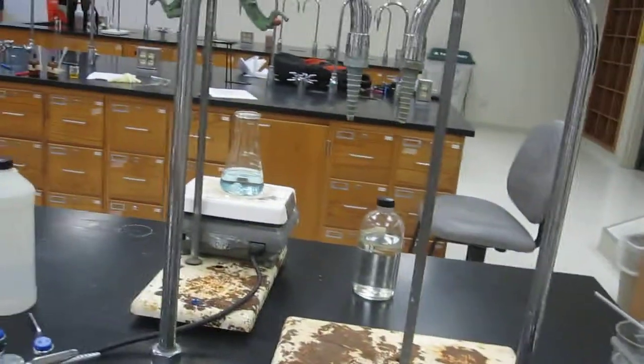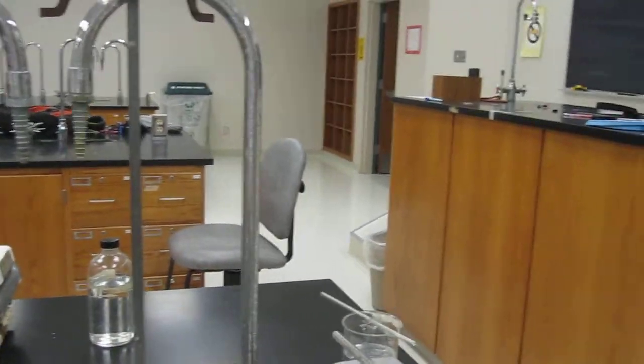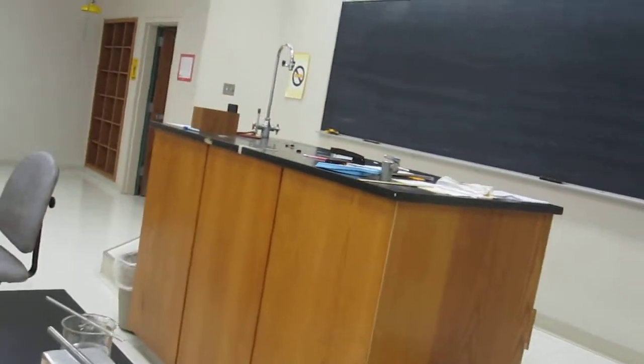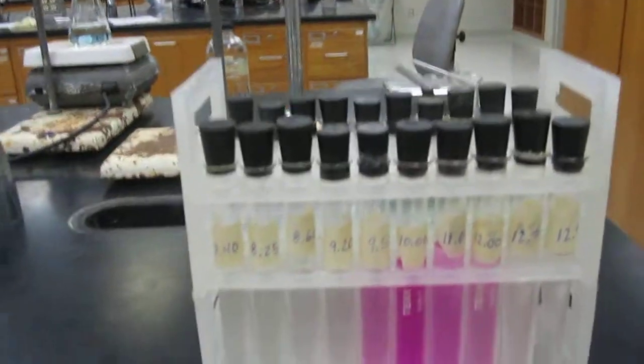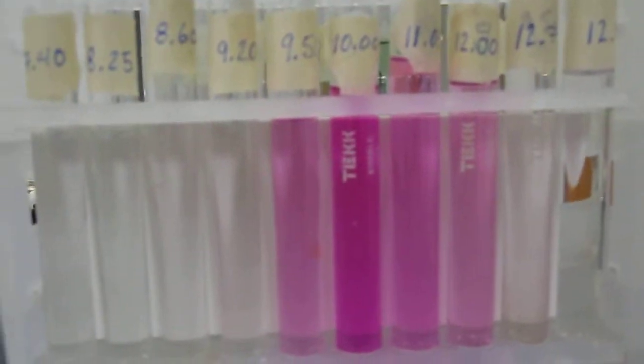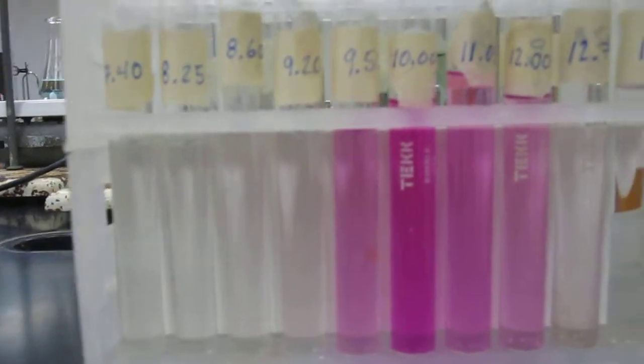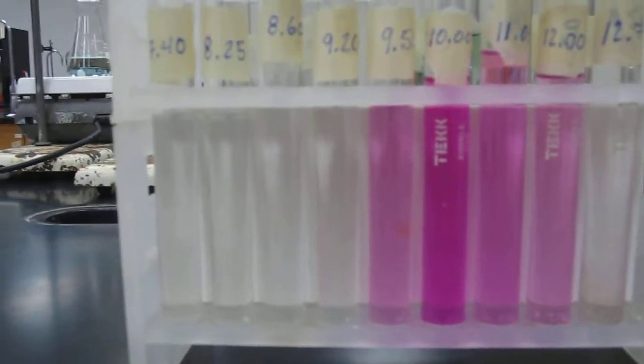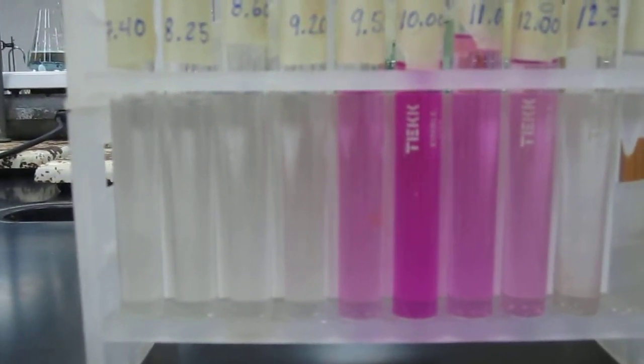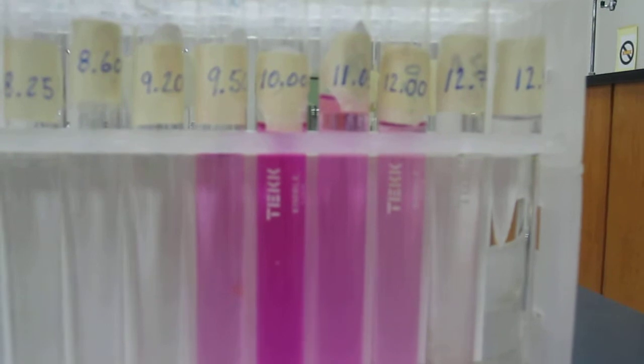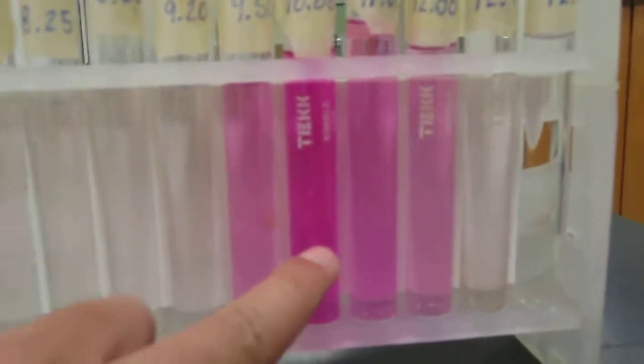And then the last indicator, indicator C that you'll be using is going to be phenolphthalein, and you're going to be using this in pH range 8 to 10. And you can see that in that pH range, it turns from colorless to what's known as fuchsia or pink. And then you can see it actually at 10 is really dark pink.